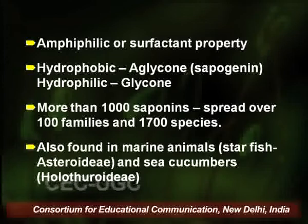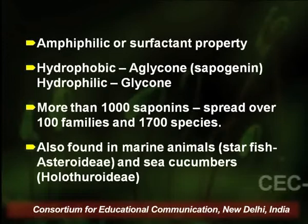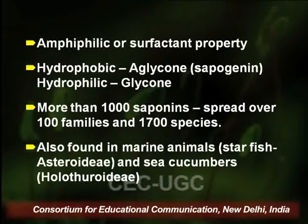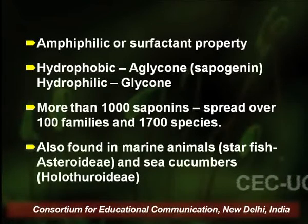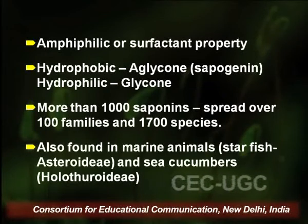Since saponins have soap-like properties, we can also say they have surfactant properties, because they are composed of two components. The aglycon part, also known as sapogenin, has hydrophobic properties, whereas the glycon part or the sugar part has hydrophilic properties. Therefore, these components have both hydrophobic and hydrophilic parts, which is why we call them surfactants. More than 1000 saponins have been identified in nature, found in more than 700 species belonging to more than 100 families.